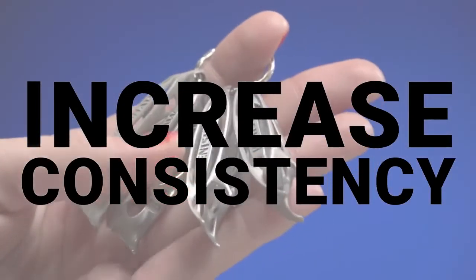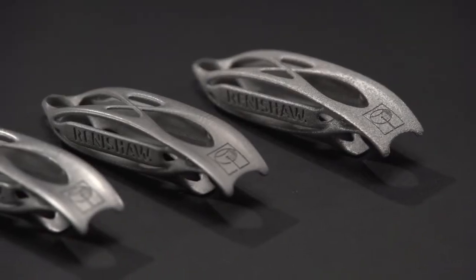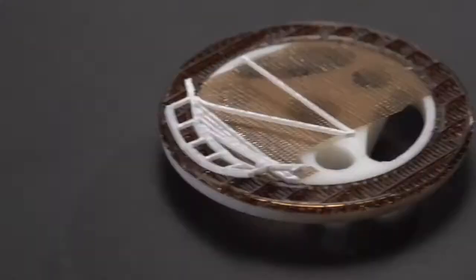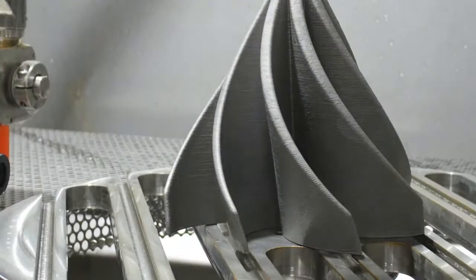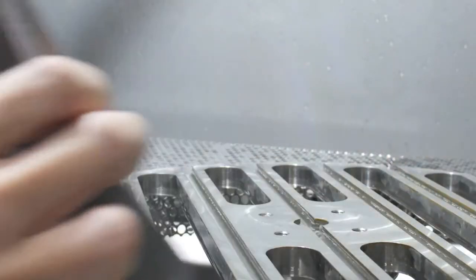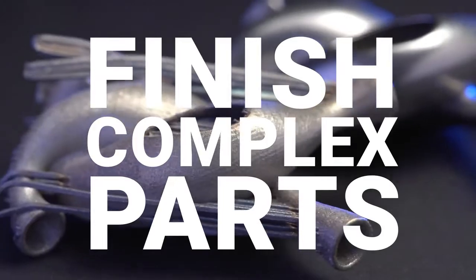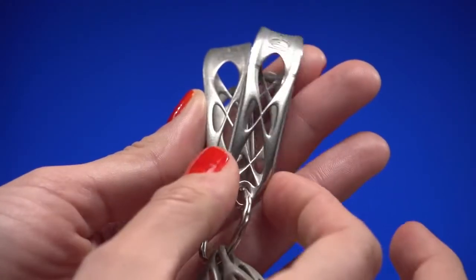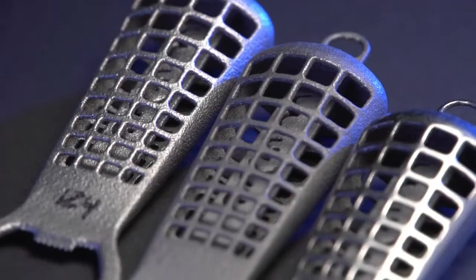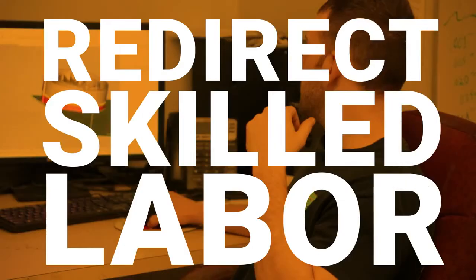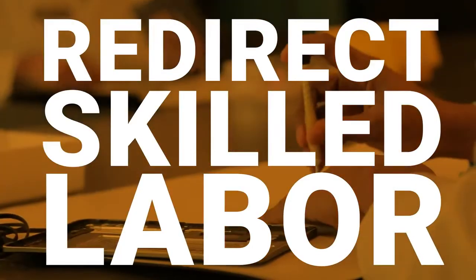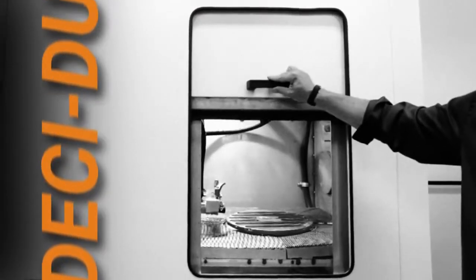Imagine the possibilities. Increase consistency of your end parts with replicable, high-quality uniformity, even with complex geometry. Maximize efficiency with fast cycle times and batch processing for increased throughput. Finish all surfaces even in parts with difficult to reach internal geometries. Redirect your skilled labor to other value-added activities. All made reality with the Hybrid DESI DUO.